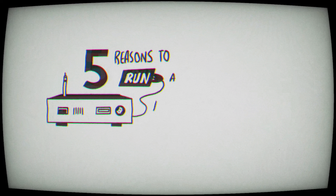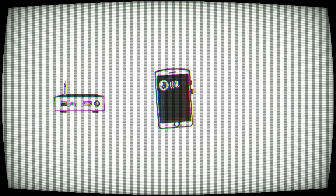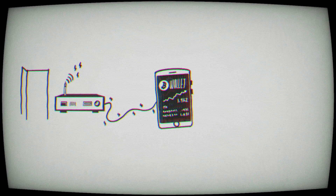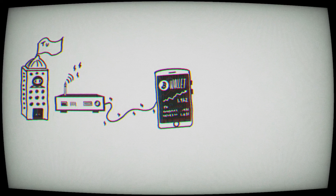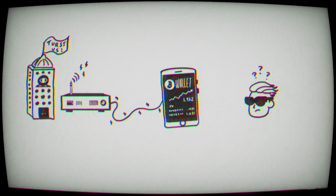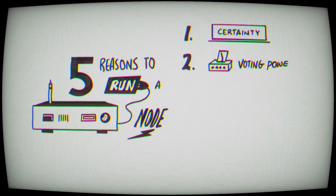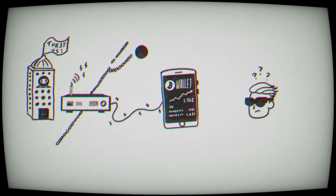There are five main reasons you should run a node. Number one is certainty. Whether you know it or not, everyone using Bitcoin is connected to a node. The wallet or Bitcoin service you're using is relaying you information from their own node or a community node — you trust their node to give you the correct information. The second reason is voting power. Nodes get to choose the rule set of the blockchain that they're running.